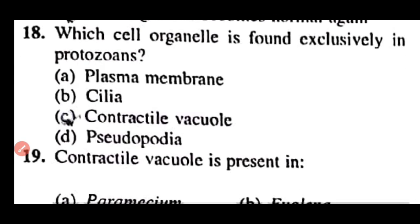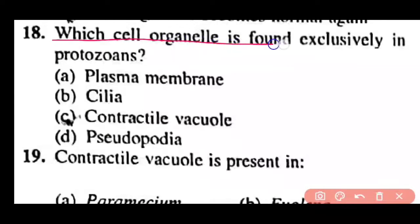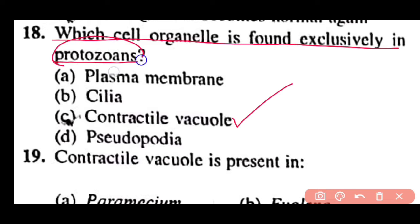Question 18: Which cell organelle is found exclusively in protozoans — plasma membrane, cilia, contractile vacuole, or pseudopodia? Correct answer is option C. Contractile vacuole is exclusively found in protozoans.